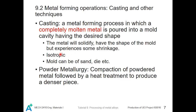Casting produces isotropic pieces because the metal will completely recrystallize into grains that are strain-free, unlike cold work which stores strain energy. Another technique is powder metallurgy, which involves compression of powder metals followed by a heat treatment to produce a denser piece. It also uses a mold, but instead of pouring liquid metal, powder is used and heat treatment is applied to strengthen it.